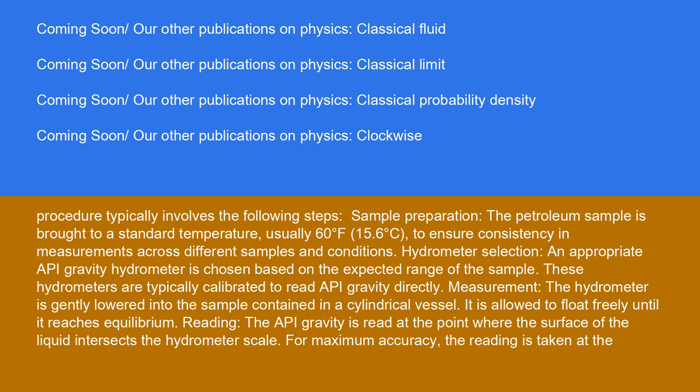The procedure typically involves the following steps. Sample preparation: The petroleum sample is brought to a standard temperature, usually 60 degrees Fahrenheit (15.6 degrees Celsius), to ensure consistency in measurements across different samples and conditions. Hydrometer selection: An appropriate API gravity hydrometer is chosen based on the expected range of the sample. These hydrometers are typically calibrated to read API gravity directly.